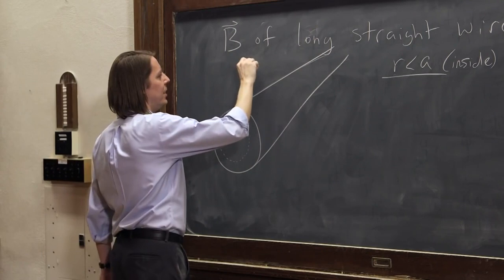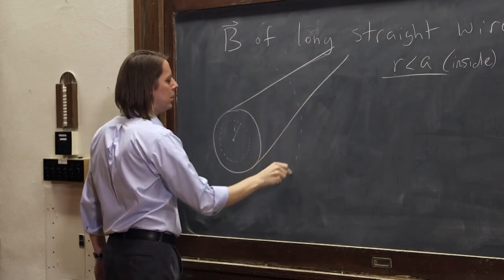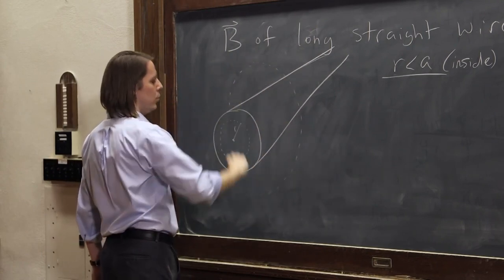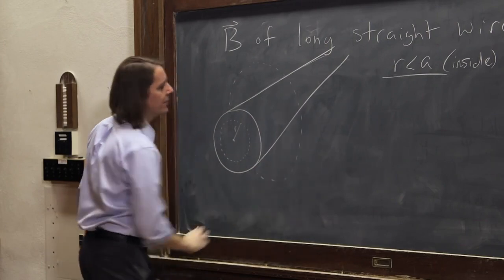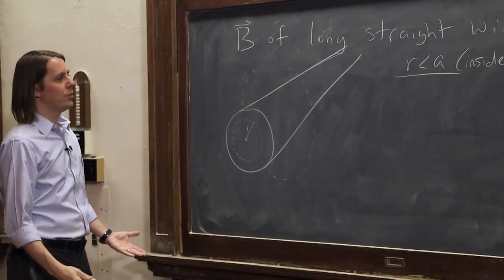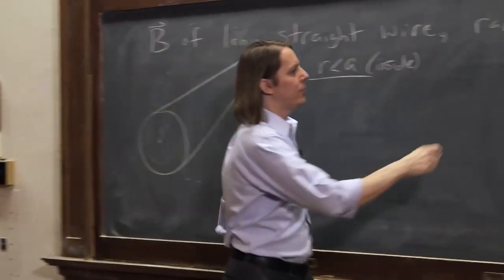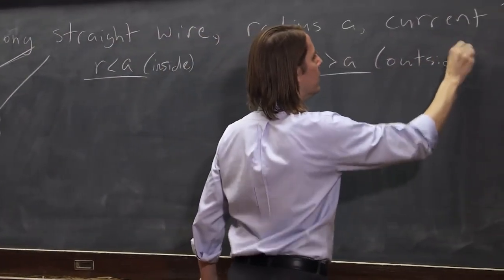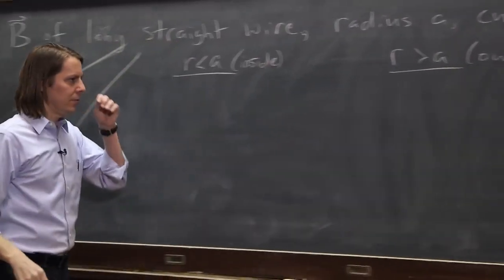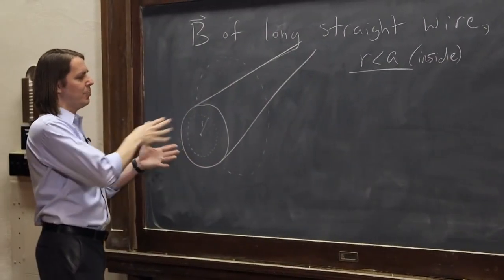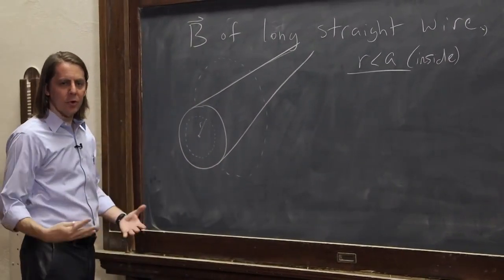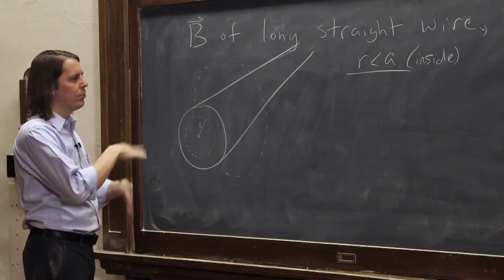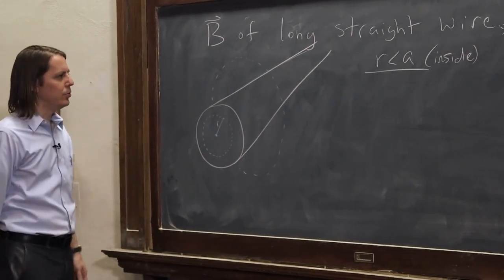Another one we might draw would be outside the wire, something like that. It would have a larger radius. It would be the radius greater than A. Okay. So this is outside. Both of these Ampereian loops, you can see, are penetrated by some current. So it makes sense. We have a loop, current going through. We have a B field. It makes sense to use Ampere's law.